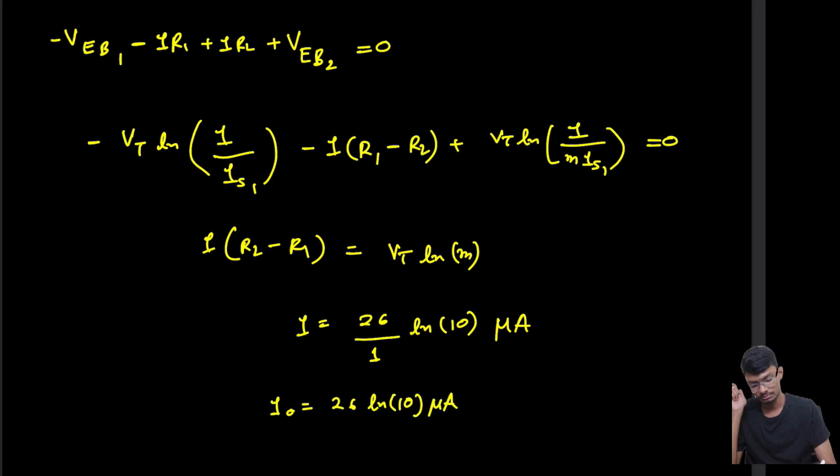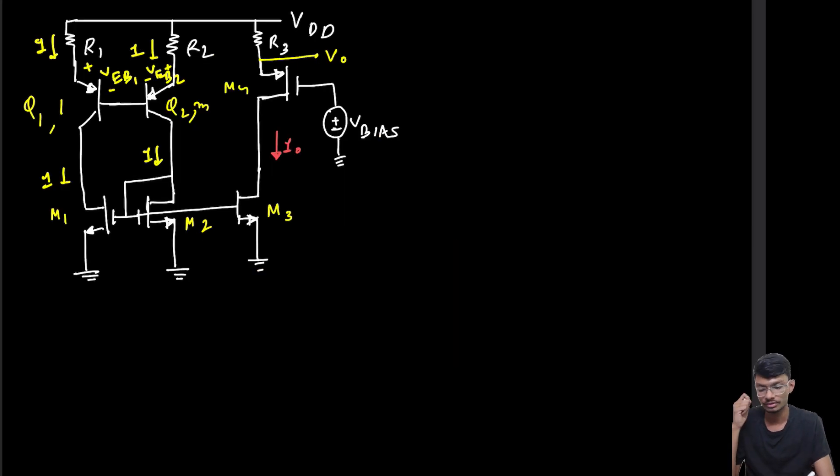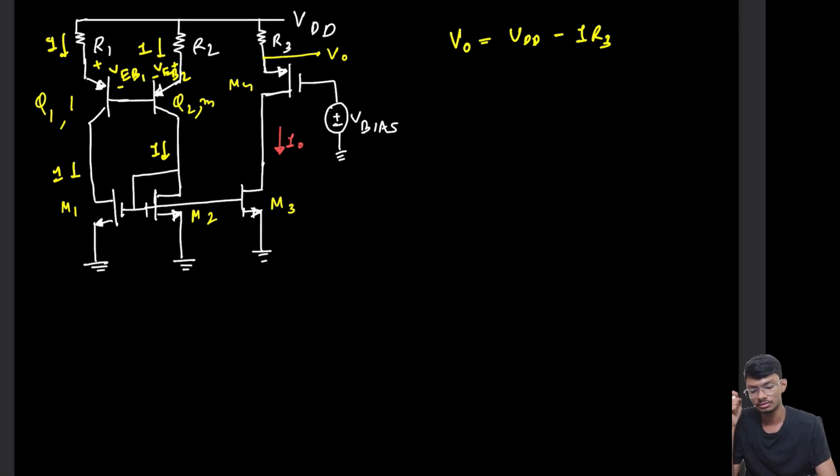Now let's find the output voltage. V0 is equal to VDD minus I into R3. I we have already found, R3 is basically 3 kilohms. So V0 equals 5 minus 26 ln(10) in micro, multiplying by kilohms. Dividing by thousand, V0 comes out to be 4.82 volts.